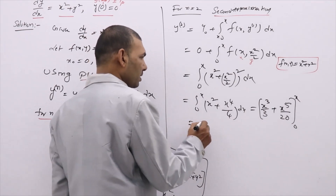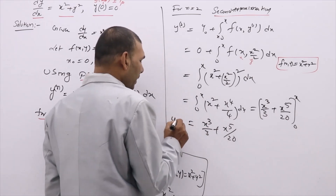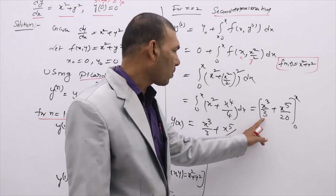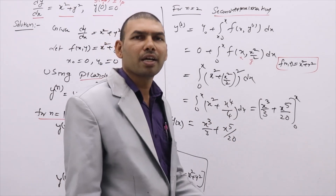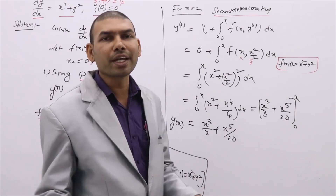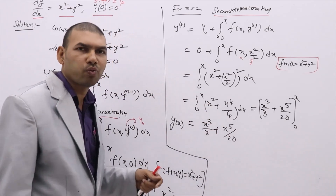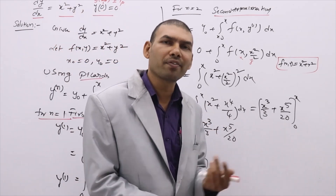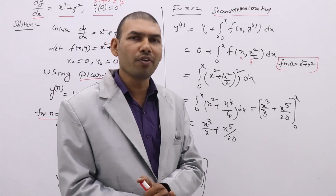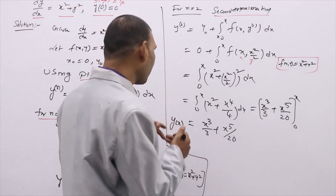Writing in the place of x, x, you get y₂ equals x cubed by 3 plus x to the power 5 by 20. We treat this as y(x) — the Picard's method solution. If we go for the next approximation, we'd need to square this term, giving powers like x⁶ and x¹⁰. These higher powers can be ignored because 0.4 to the power 10 gives a negligible value. So there's no significant difference between the second and third approximation, and we can conclude here.